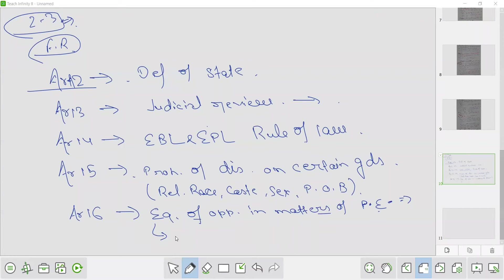Religion, caste, place, place of birth, residence and descent. After Article 17, yeah absolute right. Yes, it's a criminal offense so we have related act. Scheduled castes, prevention of atrocities act. Then Article 18, what was that?